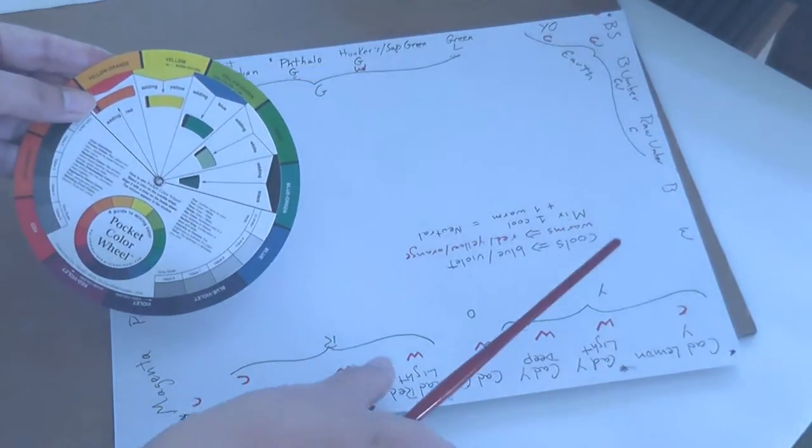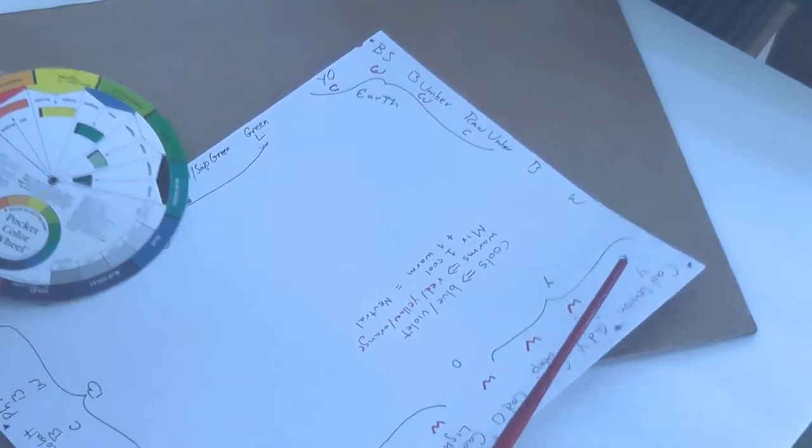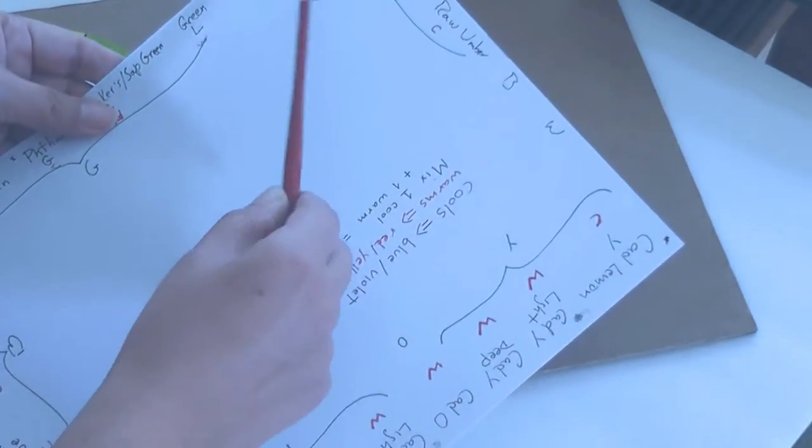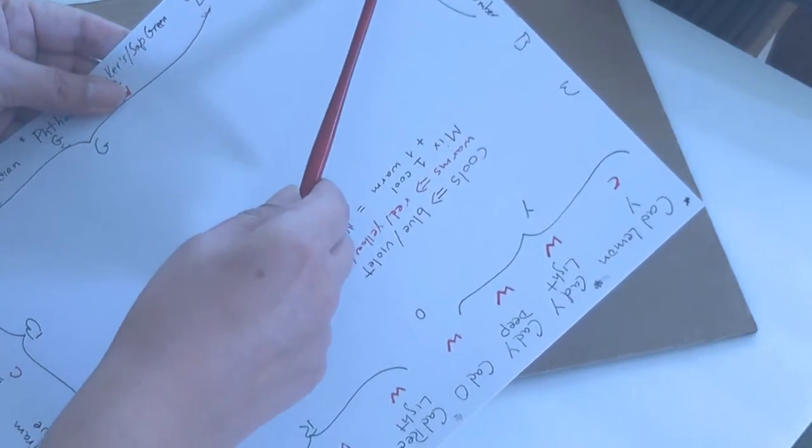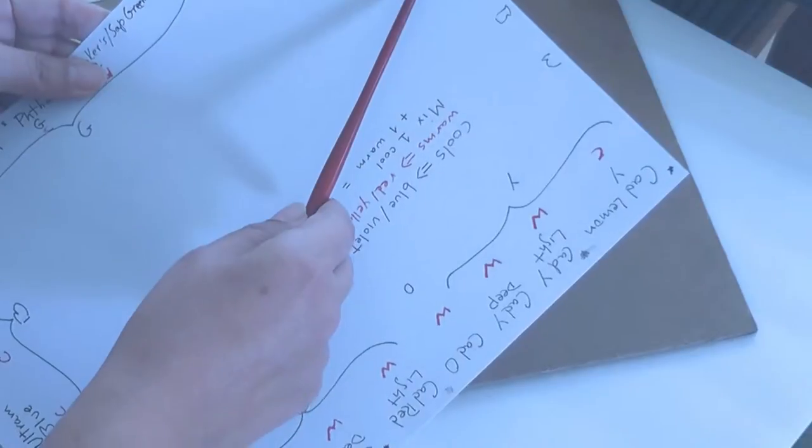Then I use the earth colors: yellow ochre, burnt sienna, burnt umber, raw umber, and of course white.